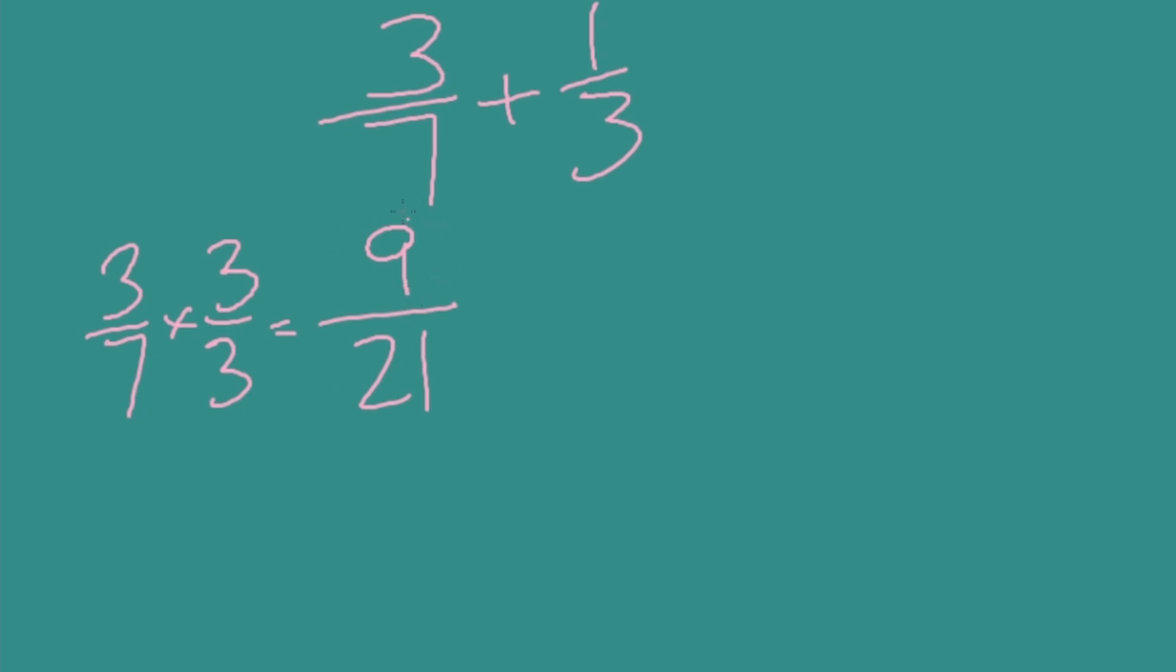Now we need an equivalent fraction for 1/3, 1/3 becoming over a denominator of 21. We got there by multiplying our other denominator, 7. So 3 times 7 is 21. 1 times 7 is 7. Because you do the same with the top to make that equivalent. 7 over 21. Now that we have equivalent denominators, we can add it straight across. 9 plus 7, 16 over our denominator of 21. Great work.